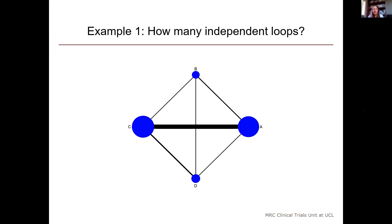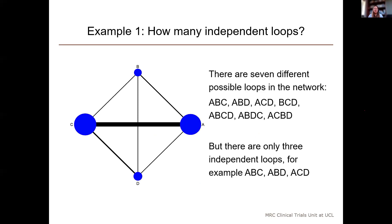The correct answer was that there were three independent loops, but it's not easy. The reason for showing you this is to show that it's not very easy to identify the number of independent loops.